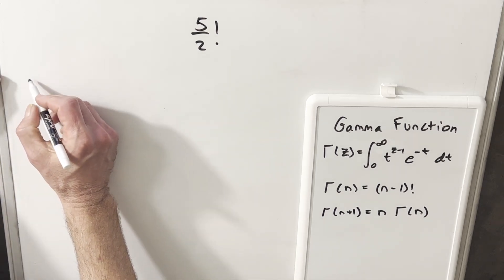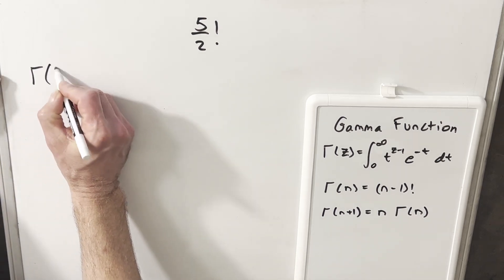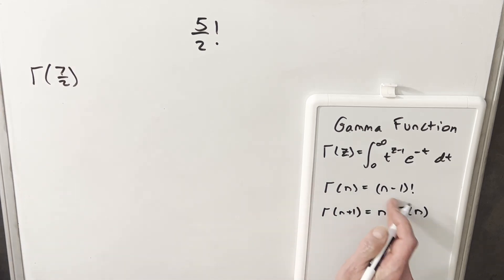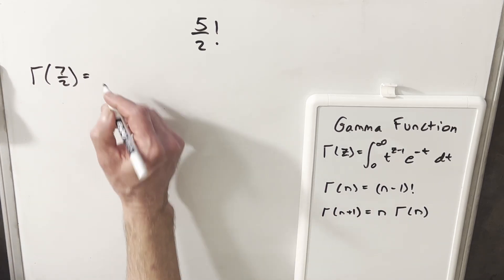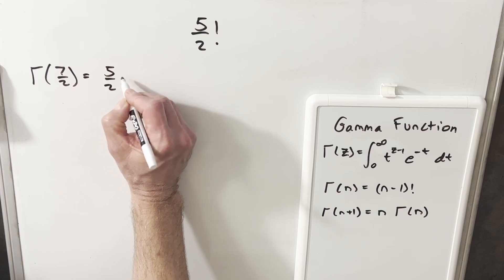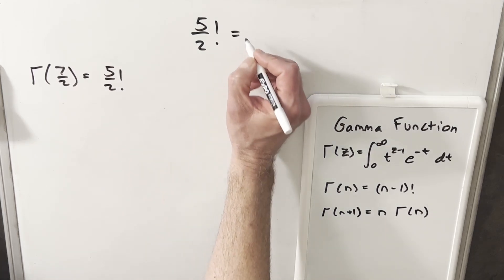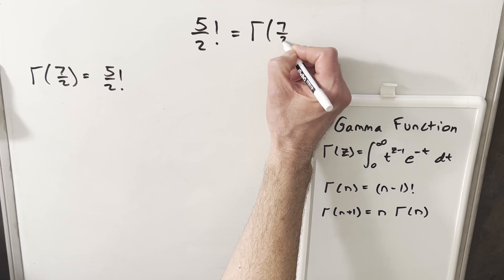Kind of working it backwards, that the gamma of seven halves, if we subtract one from seven halves, we notice that this is the same thing as five half factorial. So what we're really looking for here is gamma of seven halves.